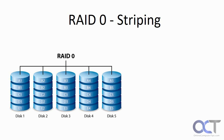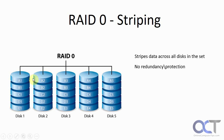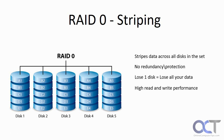First we have RAID 0, which is Striping. It stripes all the data across all the disks when a write is performed. But there is no redundancy, because it's just making a stripe — there are no backups or anything like that. So if you lose one disk, it's going to lose the data on that disk, which is tied to the data on the other disk, and therefore your data is lost. The benefit of RAID 0 is it has high read and write performance, and that's the main reason people use it — just for performance aspects.